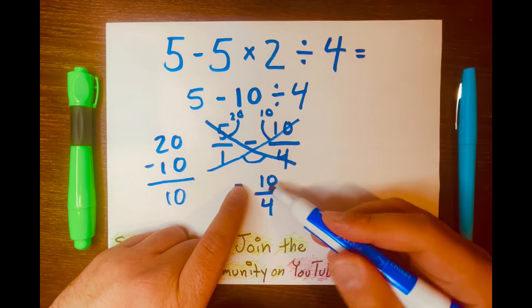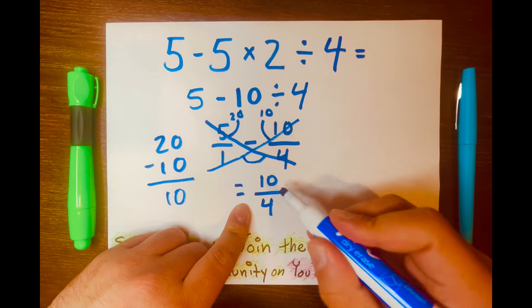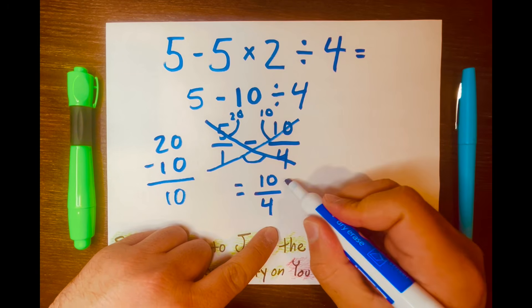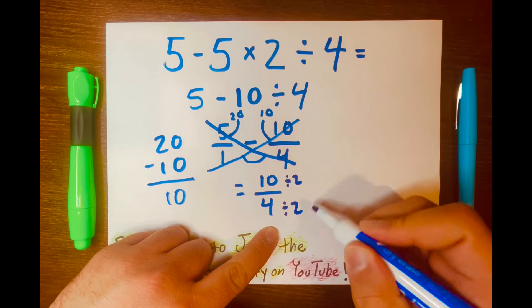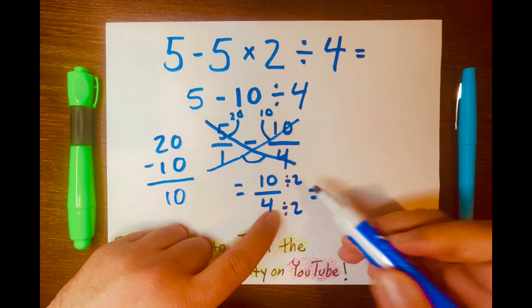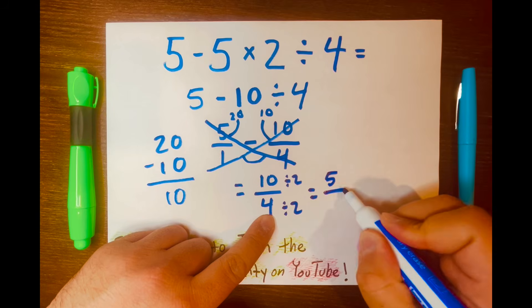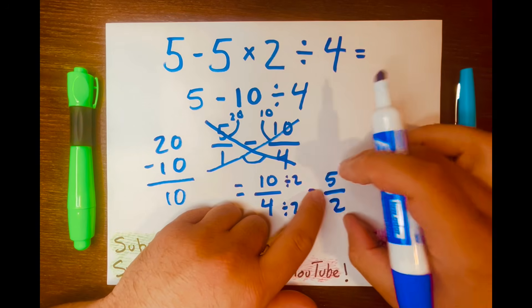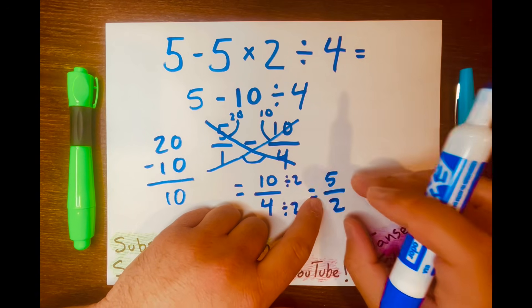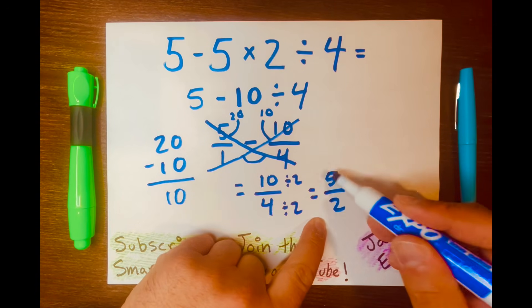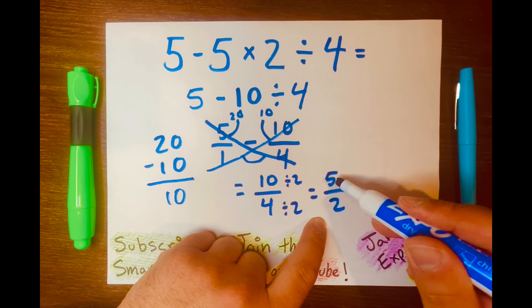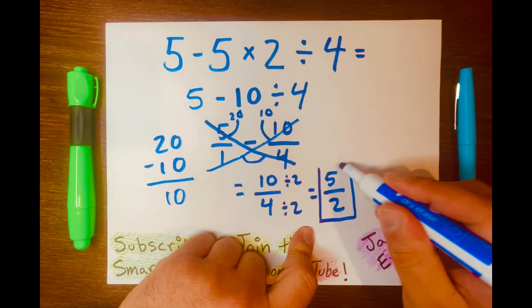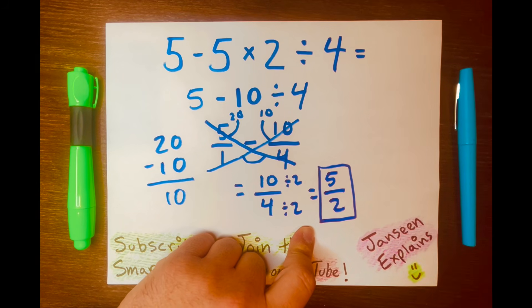So let's go ahead and break this down to a simplest form, 10 over 4. Let's just halve them because both numbers are even. So 10 divided by 2 equals 5, and half of 4 is 2. And you can't break this down more. That's it. So you have your improper fraction answer, 5 over 2.